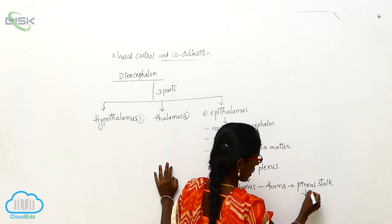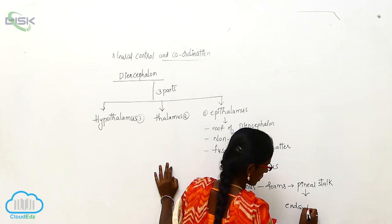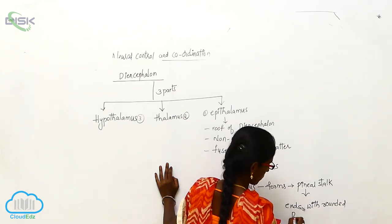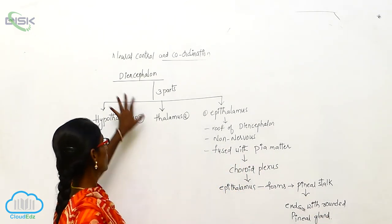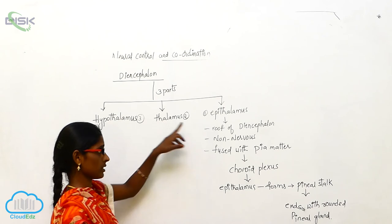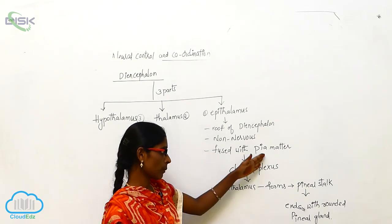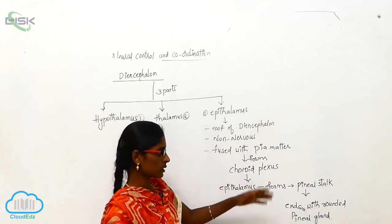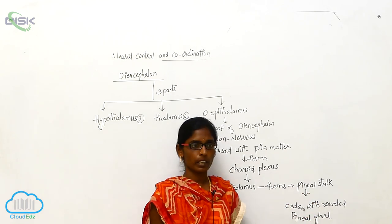The pineal stalk continues and ends with a rounded pineal gland. The epithalamus is a non-nervous part, fused with the pia mater and forms the choroid plexus. The epithalamus forms a pineal stalk that continues and ends with a rounded pineal gland.